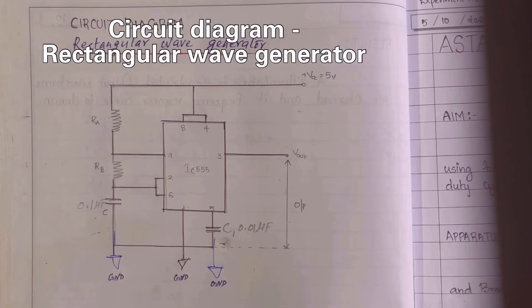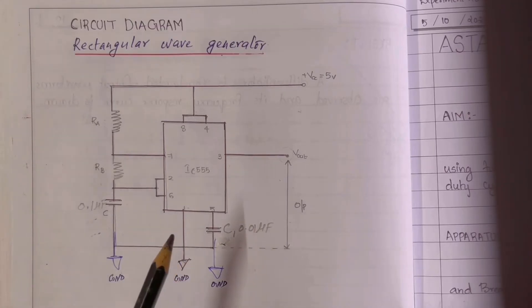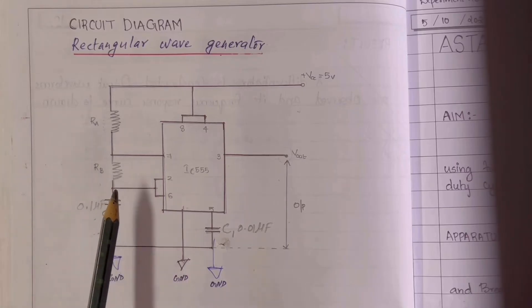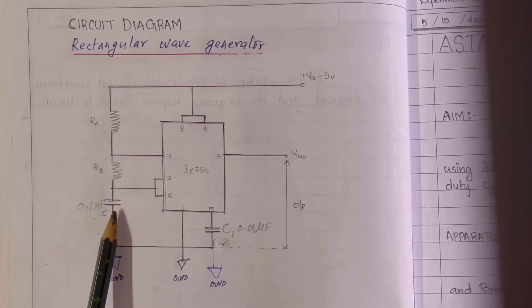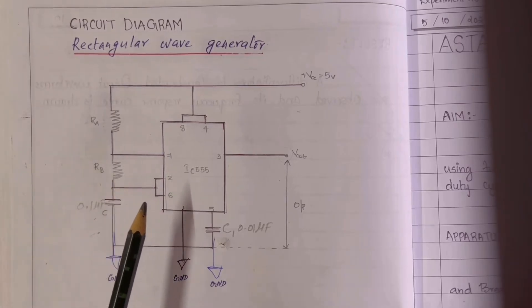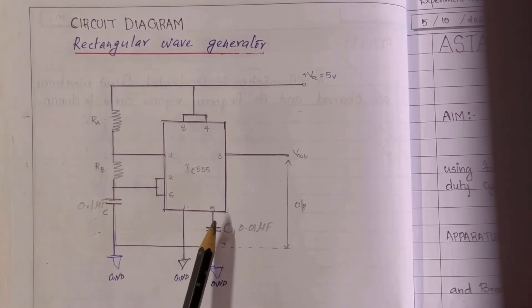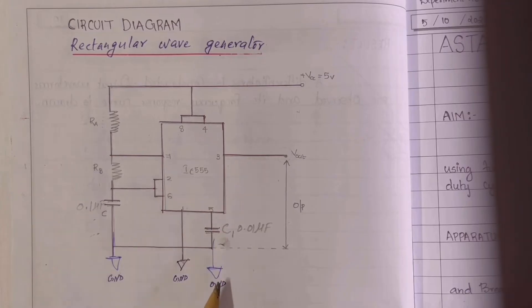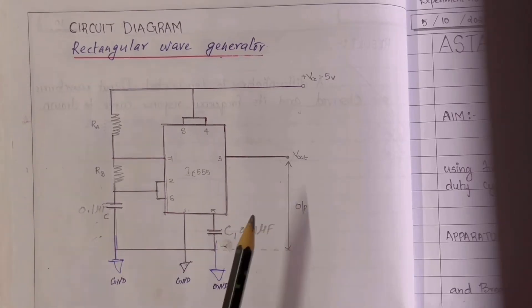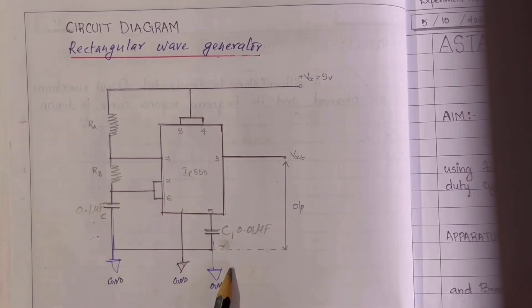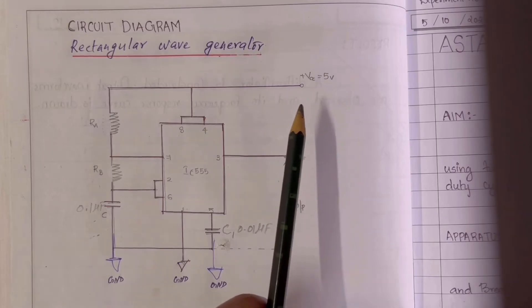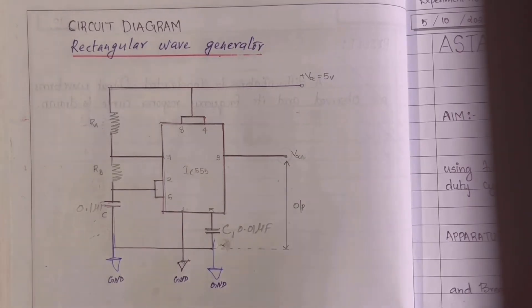This is the circuit diagram of a rectangular wave generator. Starting from pin 1, it is grounded as you can see. Pins 2 and 6 are interconnected and connected to the junction between capacitor C and resistance RB. Pin 5 is connected to capacitor C1, the other end of which is grounded, and the other end of capacitor C is also grounded. The output is taken from pin 3. Pins 4 and 8 are interconnected and connected to the other end of RA, which is then connected to plus VCC. The external supply used here is 5 volts.